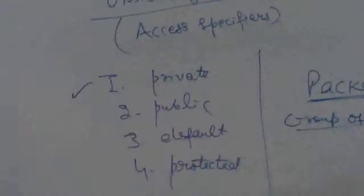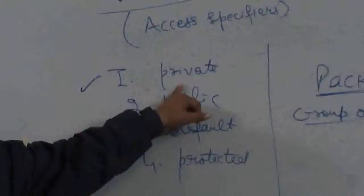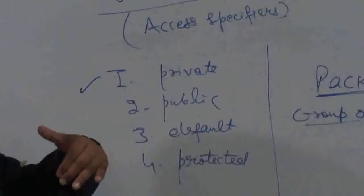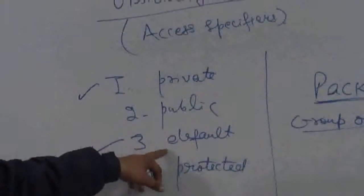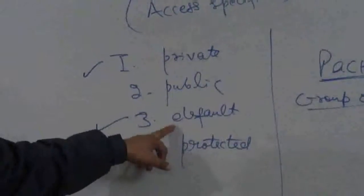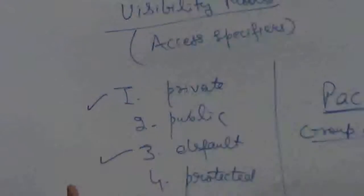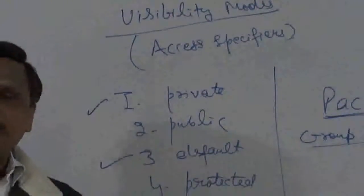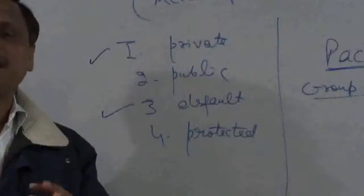First we will discuss private. Private access specifier means all the private members of a class are accessible only within the body of that class — they cannot be accessed outside the class. As far as default access specifier is concerned, all members having default access specifiers cannot be accessed outside the package. All classes belonging to the same package will be able to access the default members of a class. Default members are accessible only within the same package.